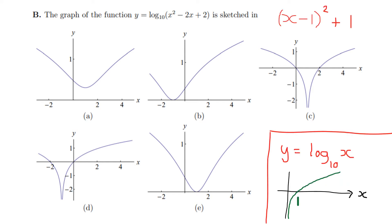For the quadratic, I've completed the square — they love completing the square for MAT. It can be written as (x−1)² + 1. In the bottom right I've drawn y = log₁₀(x): whenever x > 1 it's positive, whenever 0 < x < 1 it's negative, and it doesn't exist for x < 0. Now (x−1)² + 1 takes the place of x, and it's always at least 1, so we're only in the region where the log is positive — our curve is always above the x-axis, immediately eliminating two of the five graphs.